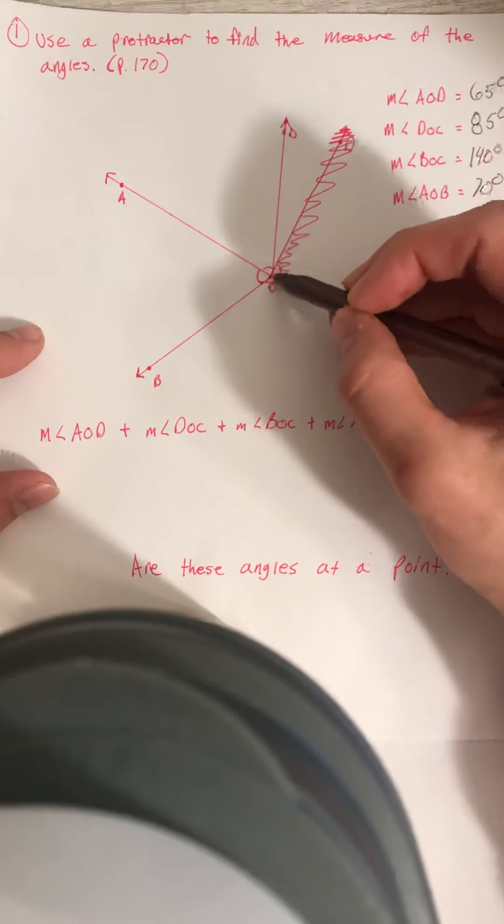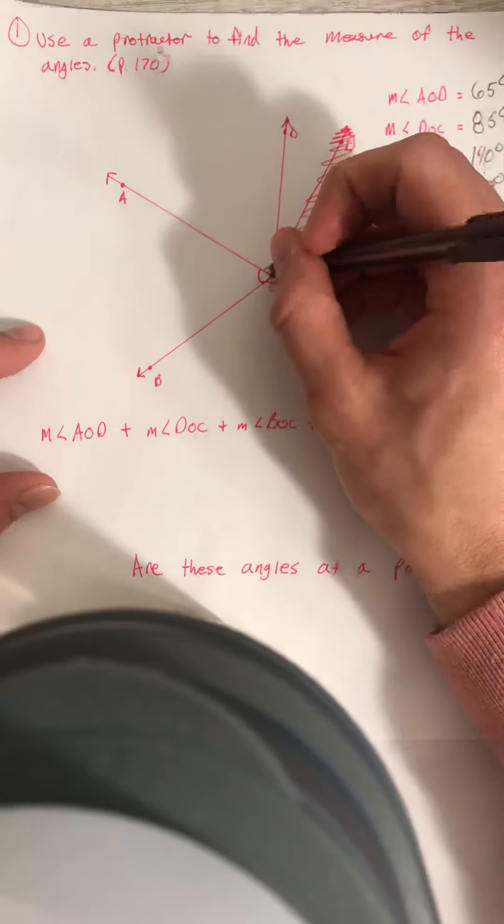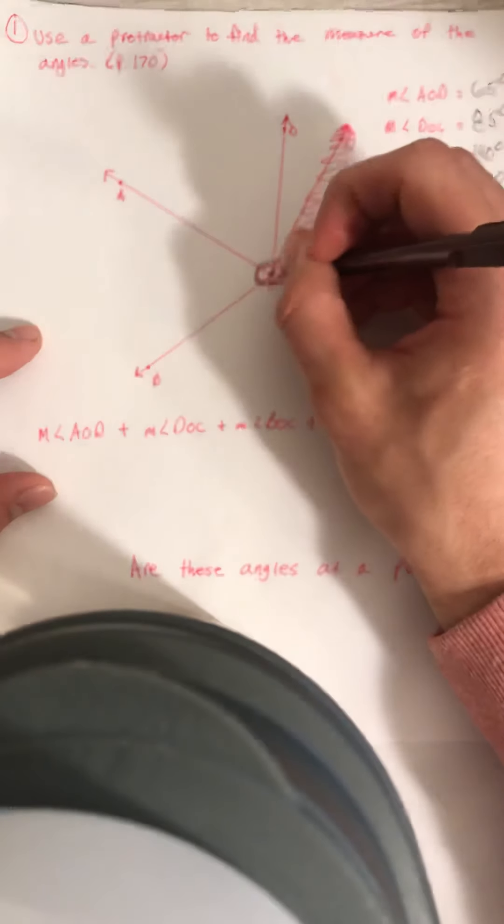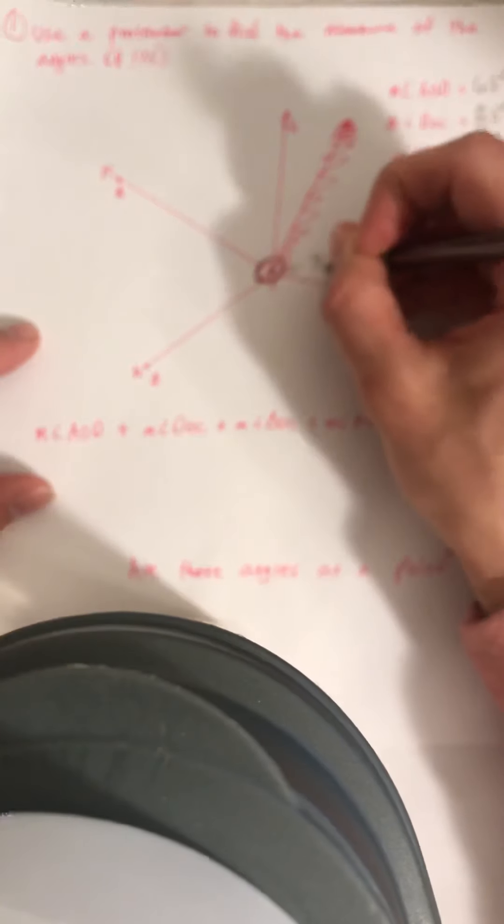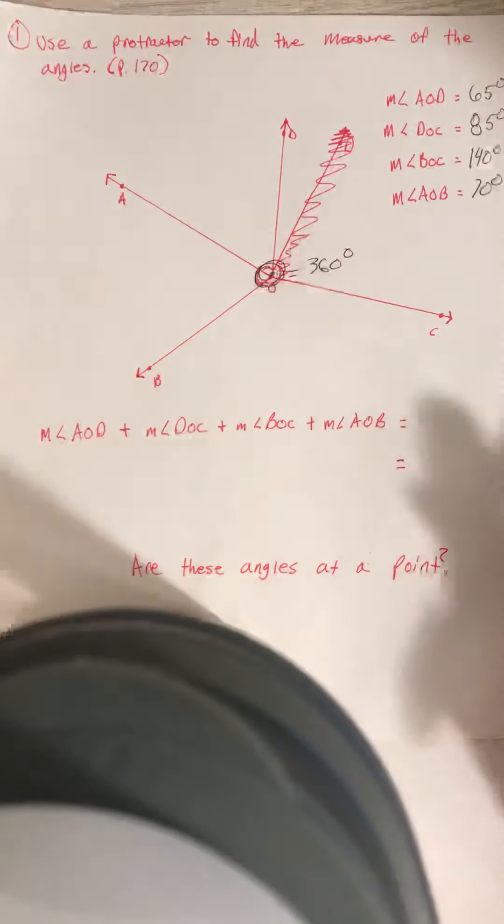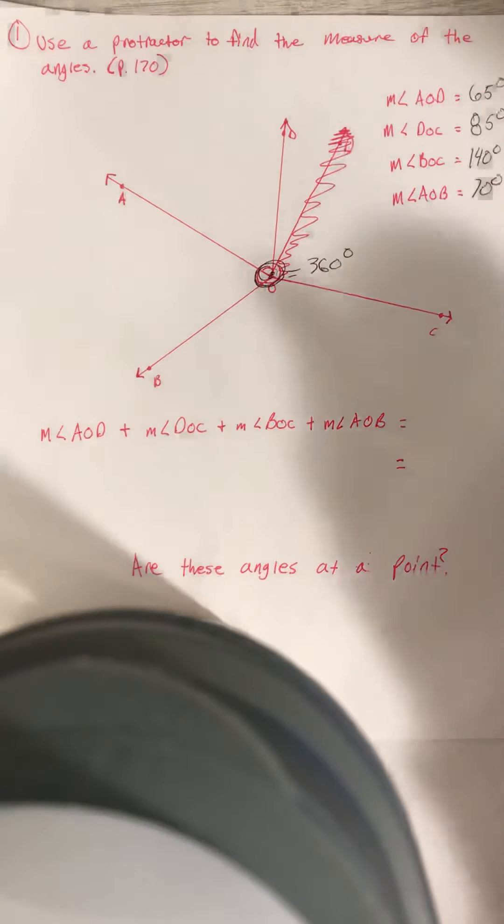All of the angles will meet at a point here, point O. And if that happens, then the angle measure of this point will equal 360 degrees total. So if I do my math, I do my addition, and I start to add it up, the total, the sum, should equal 360 degrees.